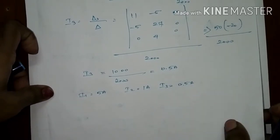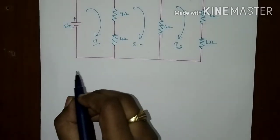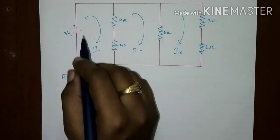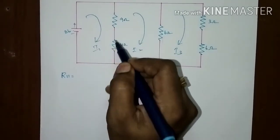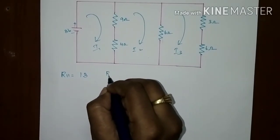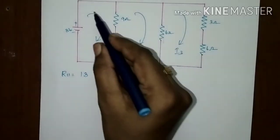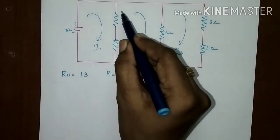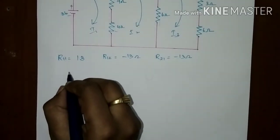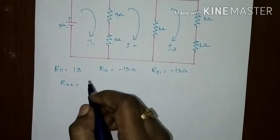Let's move on to the next problem. We need to find the mesh currents I1, I2, I3 by finding the determinants. The determinant is straightforward — 3 meshes gives a 3×3 determinant with 9 elements. R11 is the self-resistance of the first mesh; I1 flows through resistances of 9 and 4 ohms, so R11 = 13 ohms. R12 is the resistance common to the first and second mesh; the currents flow in opposite directions — top to bottom vs. bottom to top — so R12 = minus 13 ohms. By symmetry, R21 = minus 13 ohms. The self-resistance R22 of the second mesh is 9 + 6 + 4 = 19 ohms.